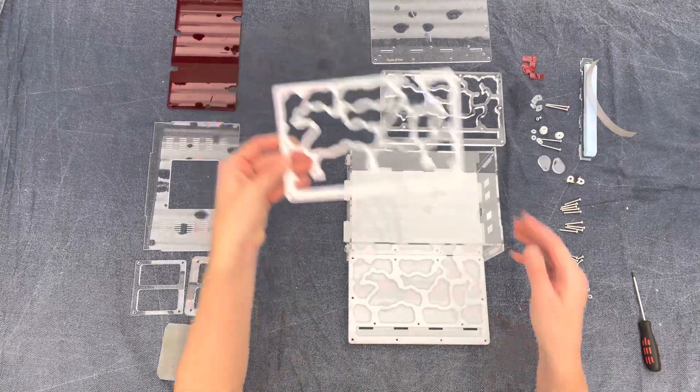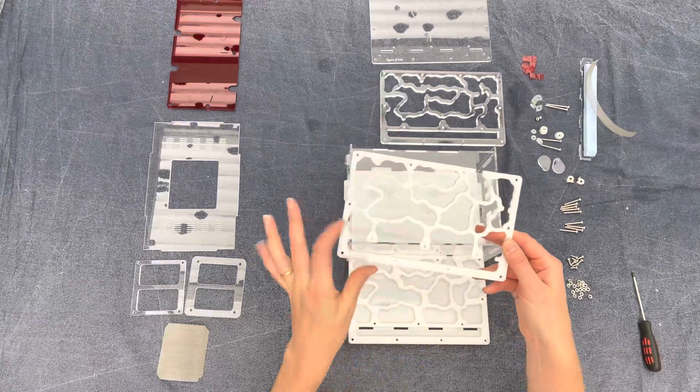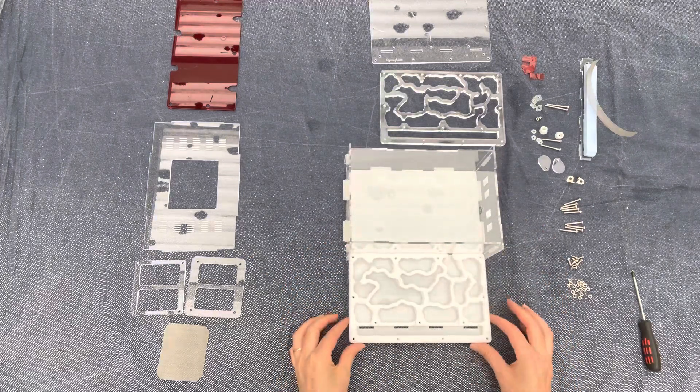Next take your next white piece and this has gaps. This allows the ants to access the hydration area. Sit that on top.